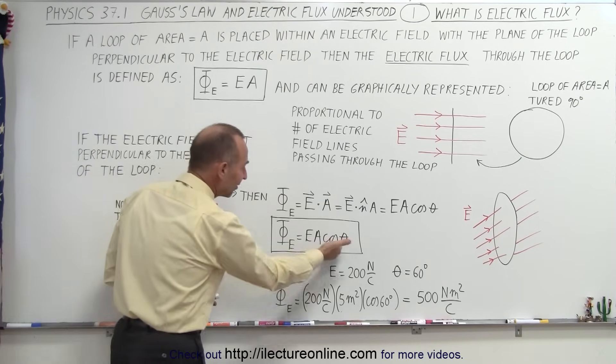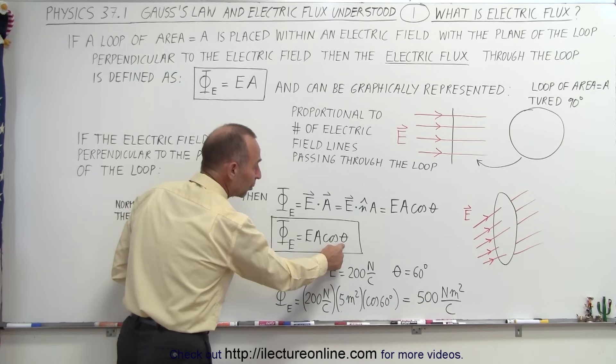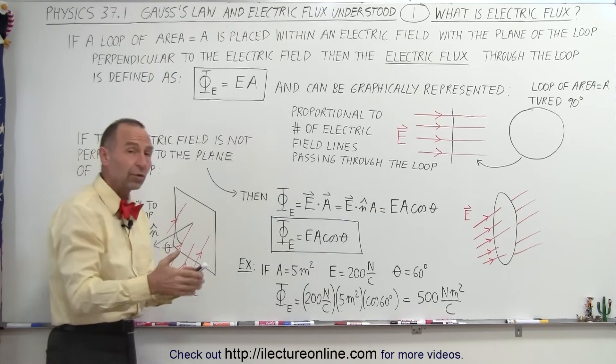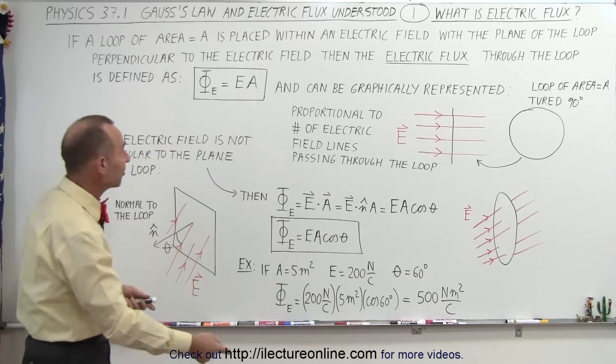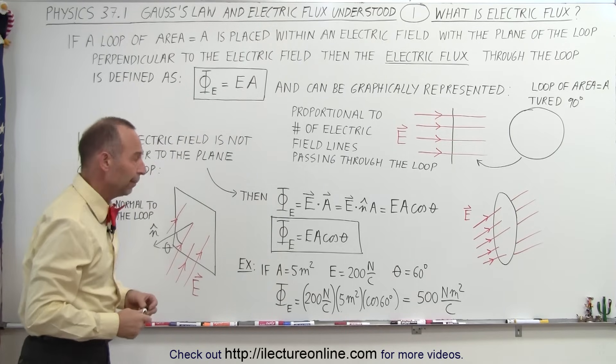Simply, we can write it like this. And of course, if the angle between them is 0 degrees, the cosine of 0 is 1, that simply drops out, and you come back to the original equation right here.